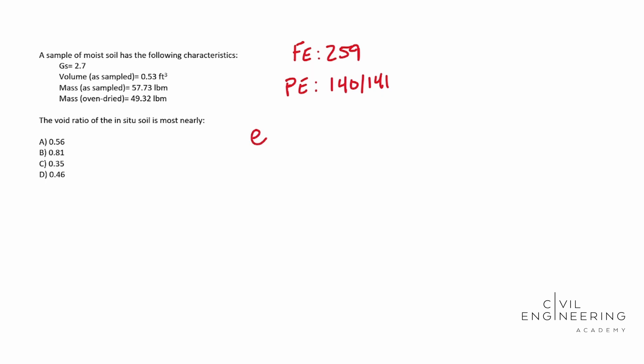We're looking for the void ratio. The formula for this one is going to be E equals the volume of the voids over the volume of the solids. The volume of the voids is actually equal to the volume of the air plus the volume of the water. So you can imagine whenever you evaporate the water, that water got trapped in the voids. That's why you include the volume of water and the volume of air — sometimes you have a fully submerged sample with no air, or a sample that has a combination of both.